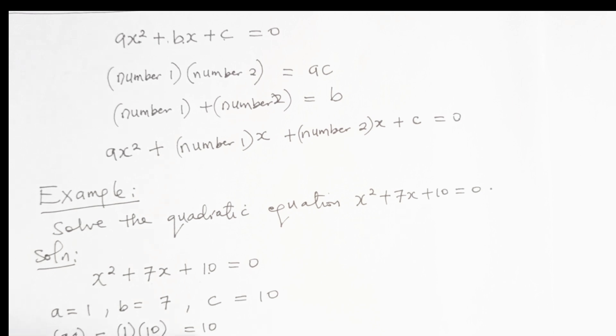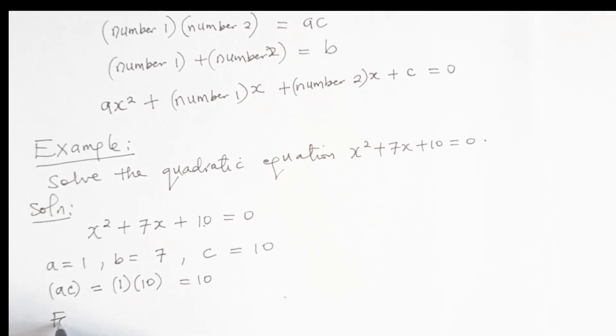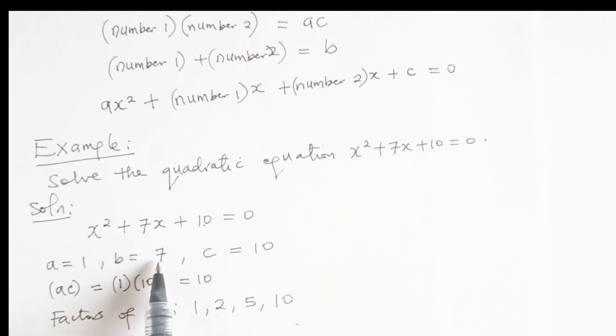What are the factors of 10? Factors of 10 are 1, 2, 5, and 10. Now let's identify the factors whose sum will give us 7 and product will give 10. If we take 2 plus 5, we will have 7. 2 times 5 will give 10, so we will take 2 and 5.